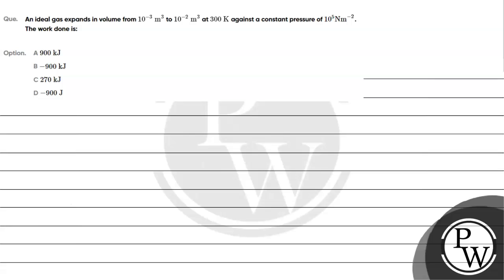Let's read this question. An ideal gas expands in volume from 10 to the power minus 3 meter cube to 10 to the power minus 2 meter cube at 300 Kelvin against a constant pressure of 10 raised to the power 5 Newton per meter square. The work done is — option A: 900 kilojoule, option B: minus 900 kilojoule, option C: 270 kilojoule, option D: minus 900 Joules.